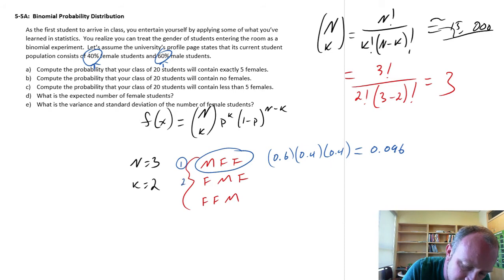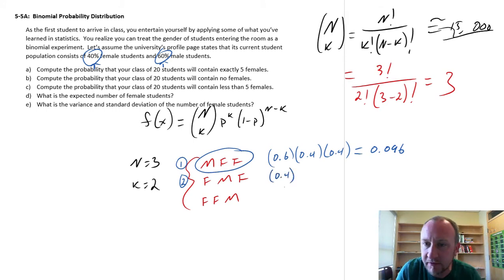So let's go through and do that again for the next possible experimental outcome. So now this is a female comes in first, so that was a 0.4 probability, then a male and then a female.